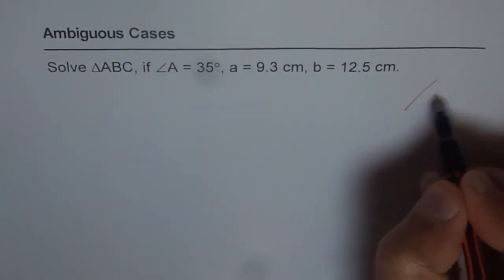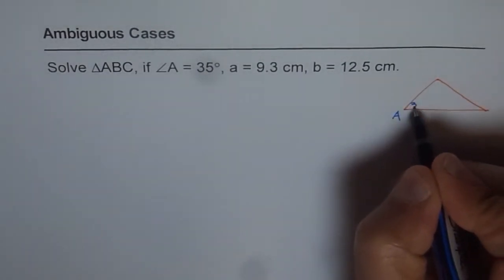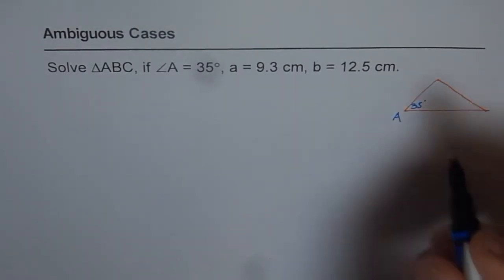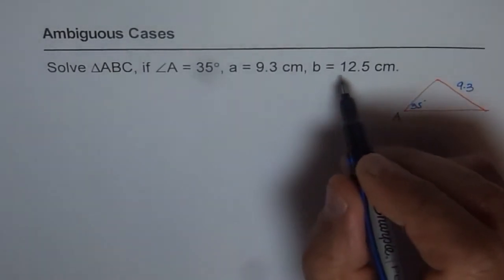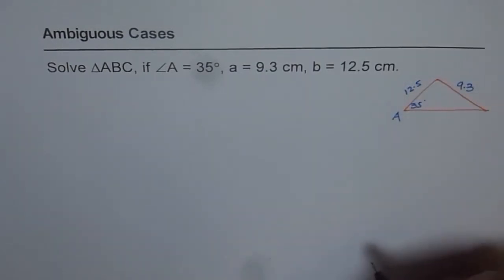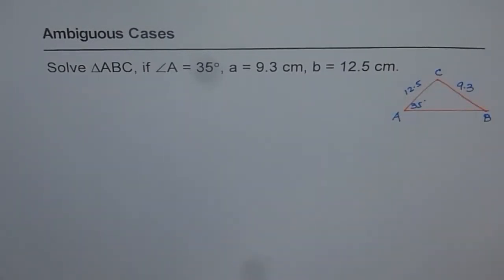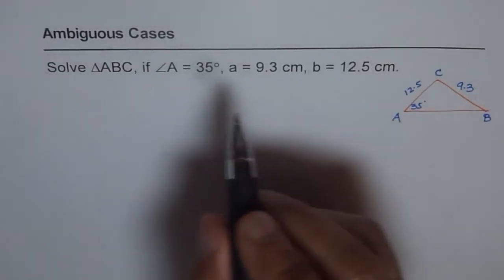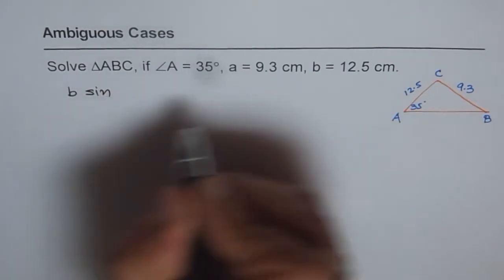Let's make a rough sketch of our triangle and then we'll start solving for it. We're given a condition where we know angle A is 35 degrees. Side A is 9.3 and side B is 12.5. This is vertex B and that happens to be vertex C. Now to start with, let us first test the value of B·sin(35°) and compare it with A.